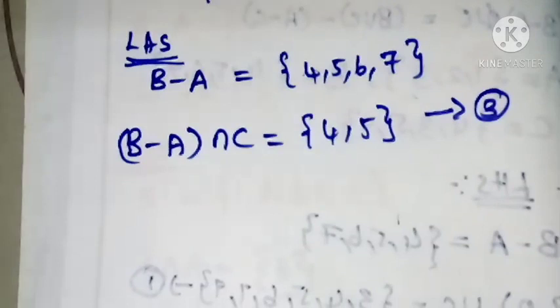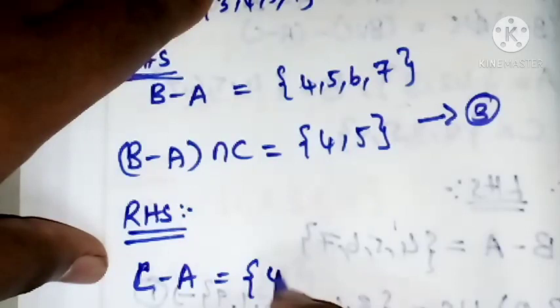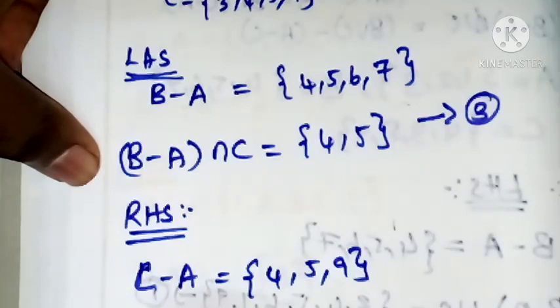The elements are 8, 6, 7. C minus A: 3 cancels out, leaving {4, 5, 9}. B intersection C minus A.